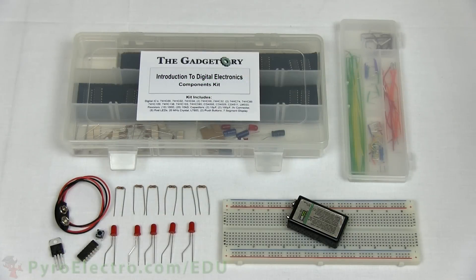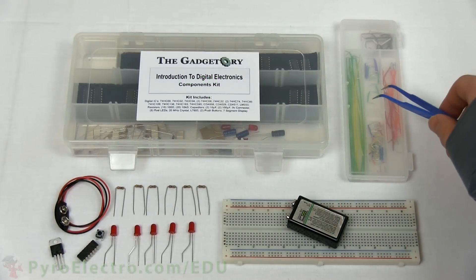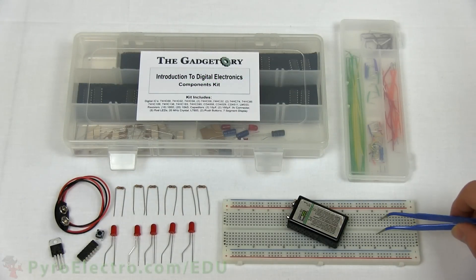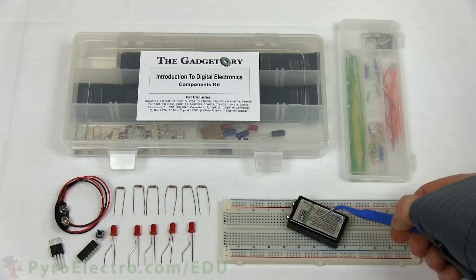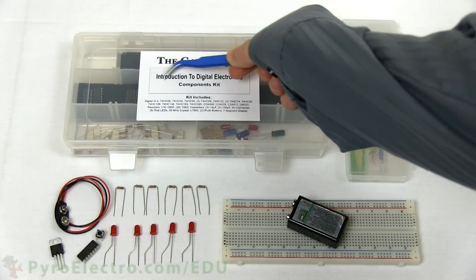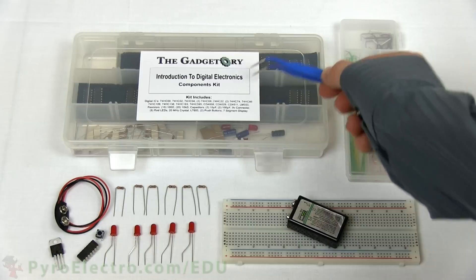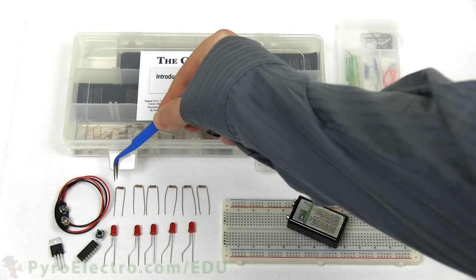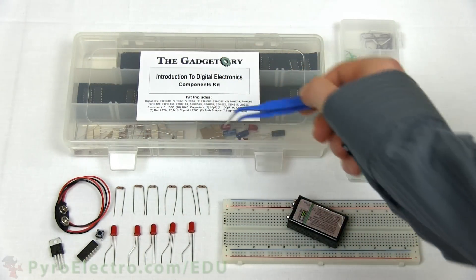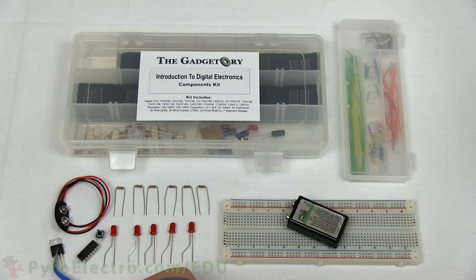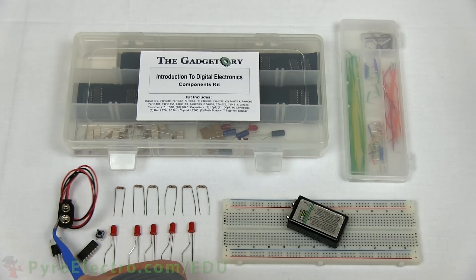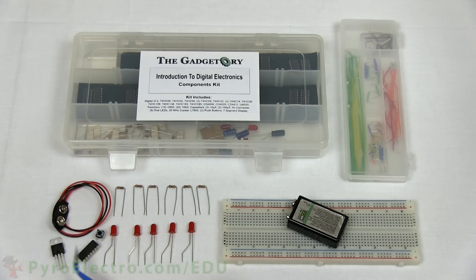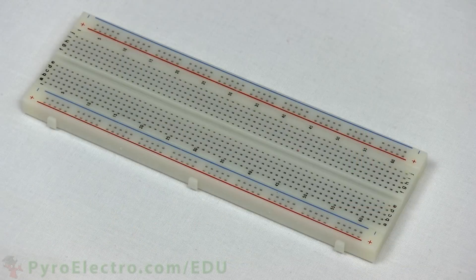To build the circuit, we're going to need a jumper wire kit, the breadboard, a 9-volt battery, and from the components kit: red LEDs, a 10-kilohm resistor, 100-ohm resistors, 7805 plus 5-volt regulator, a 9-volt battery connector, a push-button, and the 74HC107 JK flip-flop IC.